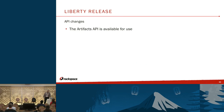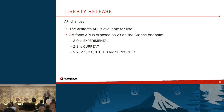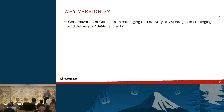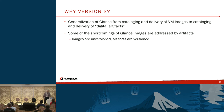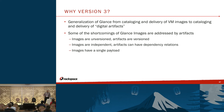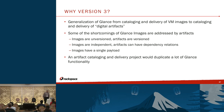With the Liberty release, the API changes — the Artifacts API is now available for use, exposed as V3 on the Glance endpoint, marked as experimental. So 2.3 is current, and everything else is just supported. And why version 3? Generalization of Glance from cataloging and delivery of VM images to cataloging and delivery of digital artifacts. Shortcomings of Glance images are addressed by artifacts: images are unversioned, but artifacts are versioned; images are independent items, whereas artifacts can have dependency relations; and images have a single payload, whereas artifacts can have multiple payloads. An artifact cataloging and delivery project would duplicate a lot of Glance functionality, so it seemed to make sense to put the two things together.